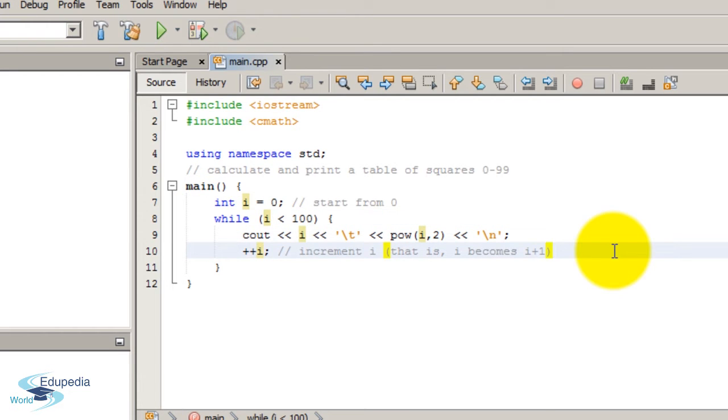Now the next statement. This statement will increment the value of i. The value of i is 0 and with this statement the value of i now becomes 1. As this is the final statement in the while loop code block, we have to check the condition again.